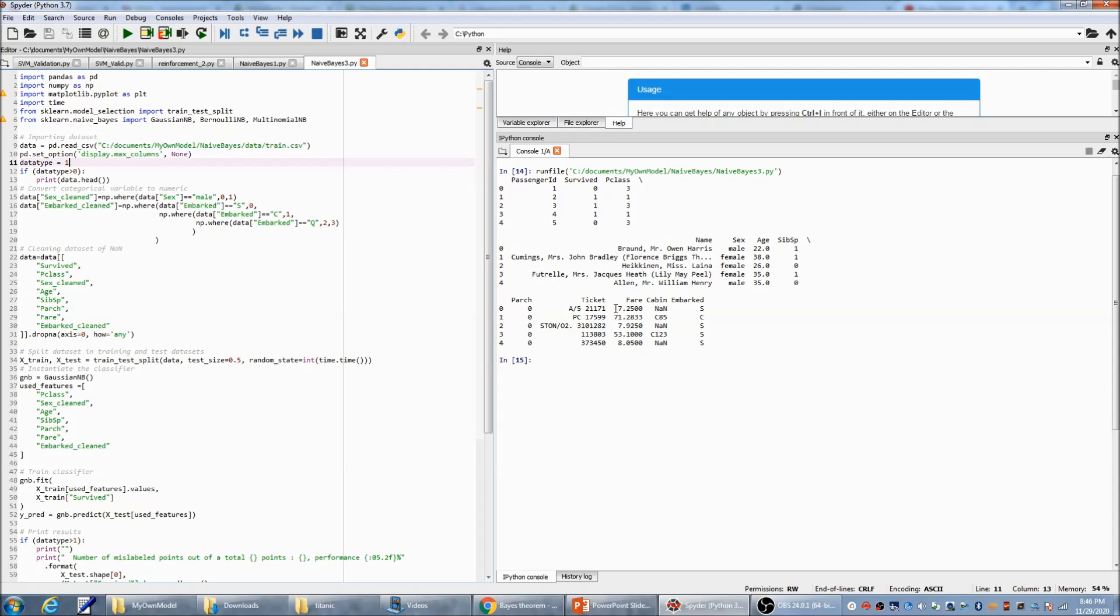You can see, this is 7.25. If you check the class, it's third class, so it's very cheap. And the second passenger was in the first class, so the price is 71.28. With all those data, we are going to build our model.